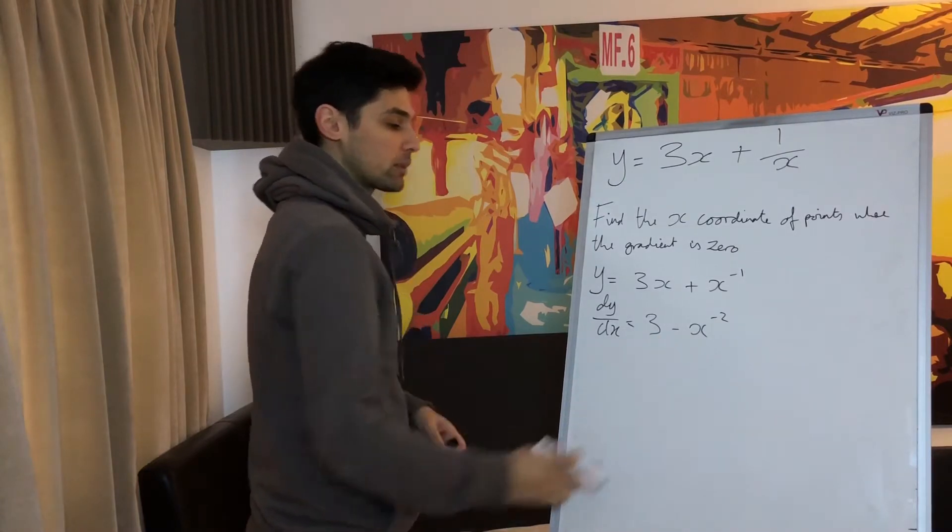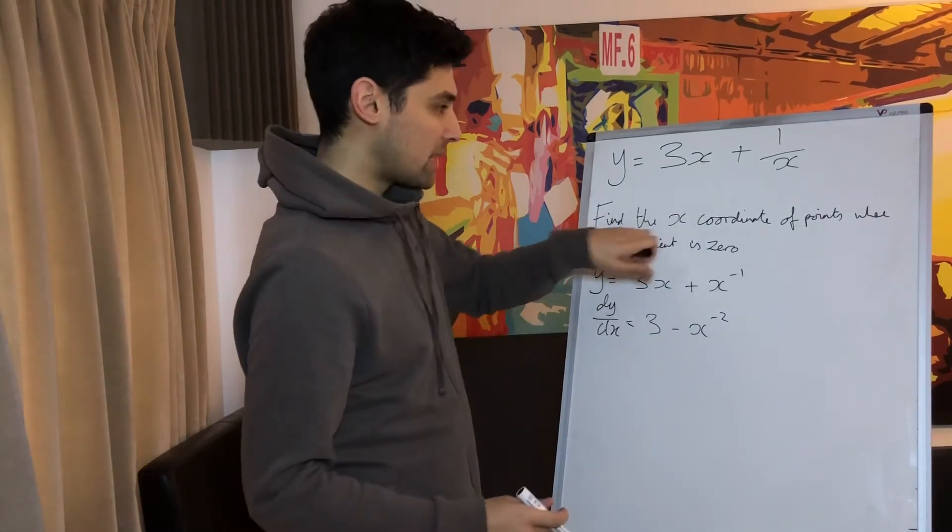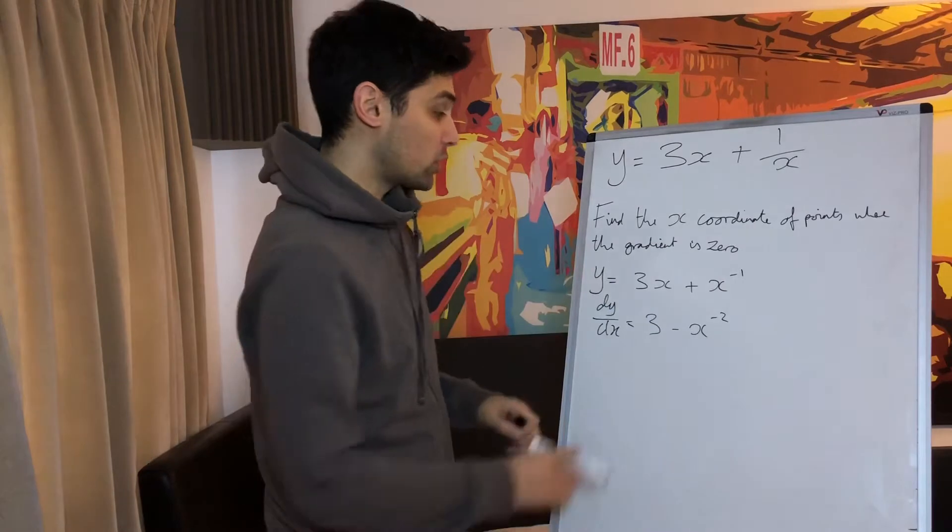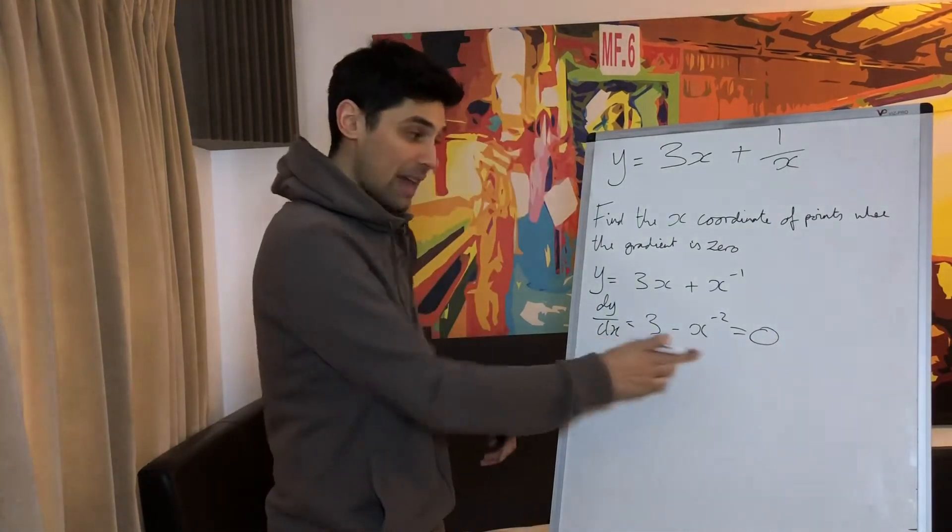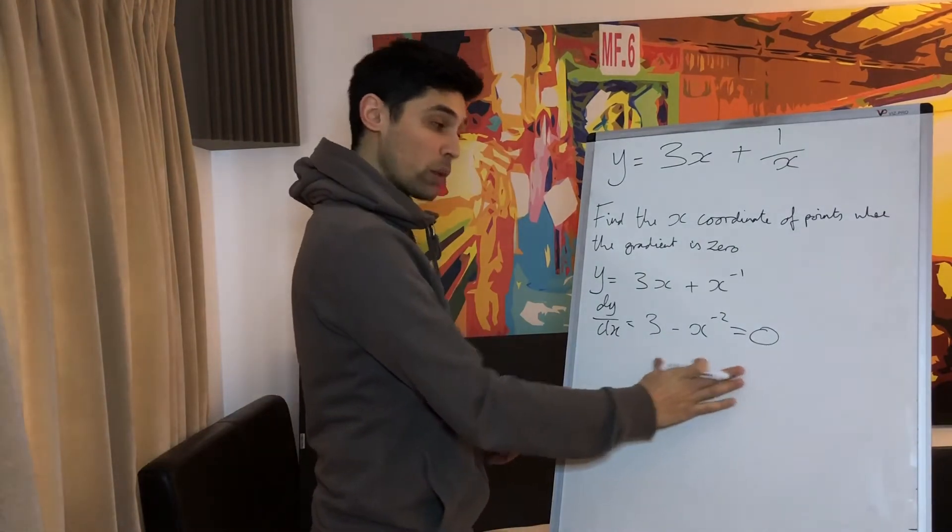That is the gradient at any point. It says here where the gradient is zero. So if this is the gradient function, that has to equal zero. So now this is what we're working with. This is the equation that we need to solve.